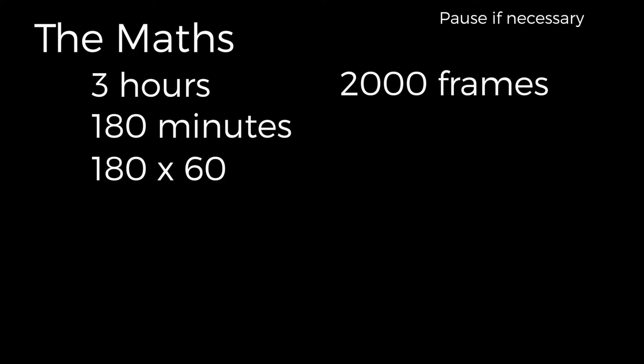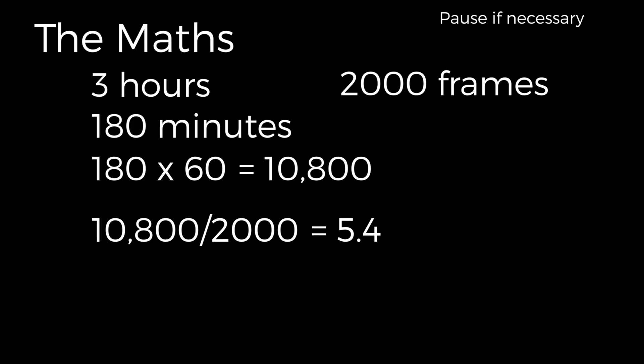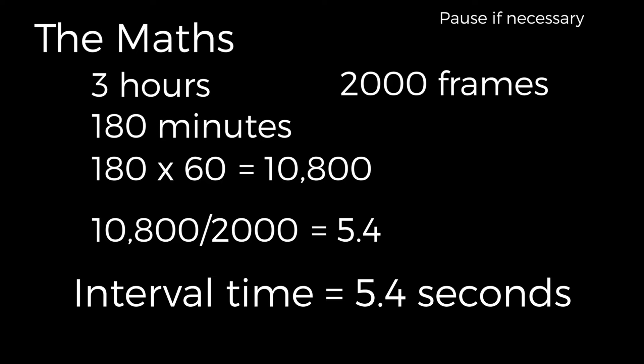To calculate a time-lapse covering three hours, I'm going to get around 2,000 shots. For three hours that's 180 minutes — multiply by 60 to get 10,800 seconds. Dividing 10,800 by 2,000 gives 5.4, so the interval time should be around 5.4 seconds. I'm going to round this up and keep my interval to six seconds. It's better to have more shots than less if you have space on your SD card.